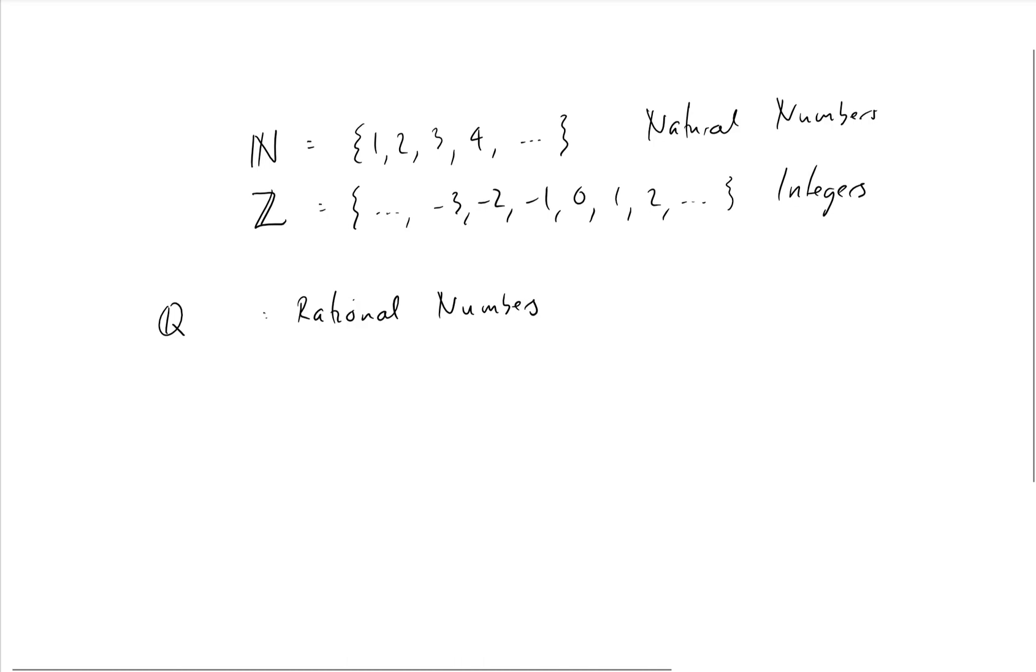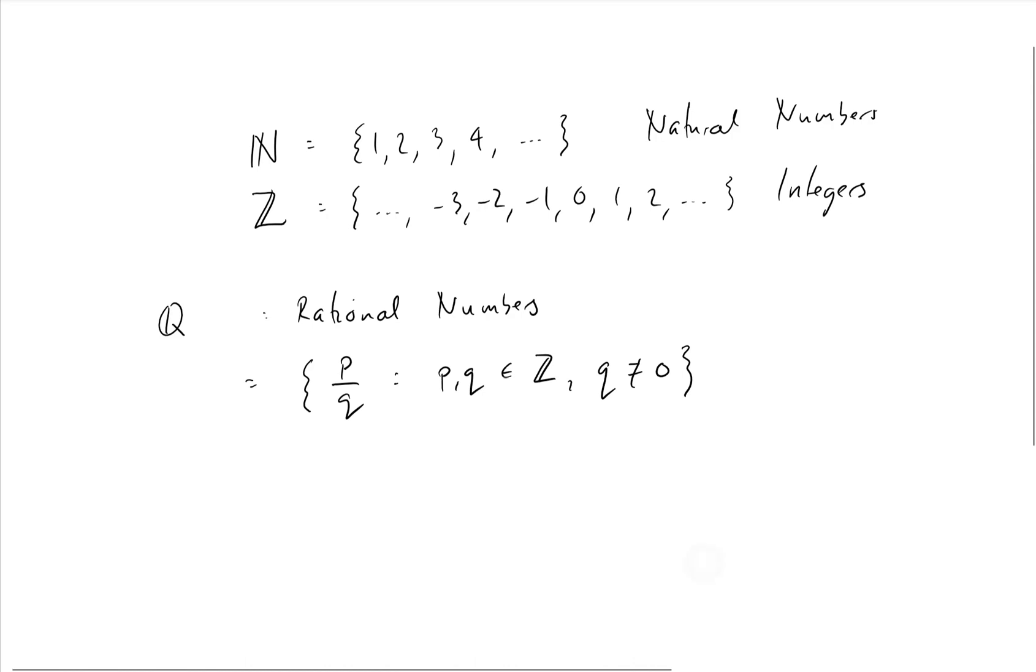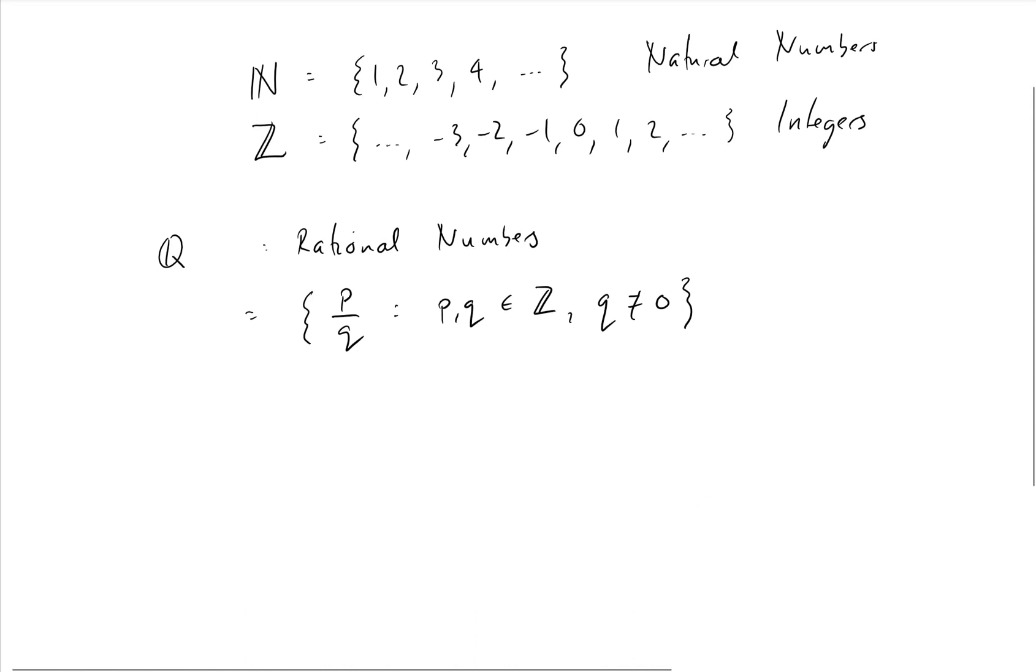These are the rational numbers, and these are the numbers that can be written, we'll just practice some notation for sets, as fractions of integers. So it's a set of all P divided by Q, where our P and Q are integers, and where Q is not equal to zero. Now, these numbers do a pretty good job of filling in the gaps between the integers.